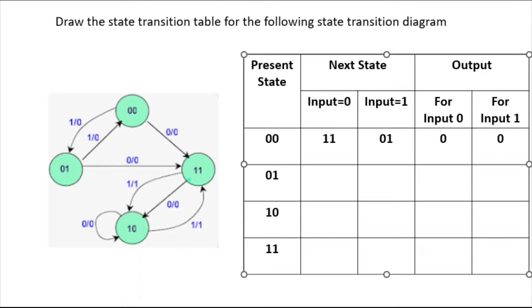Now come to state 1 1. See here, three arrows are incoming and two arrows are outgoing. This means any state can have either 0 or 1 as input, so it will always have two outgoing states. Incoming means it can be the next state for many present states.